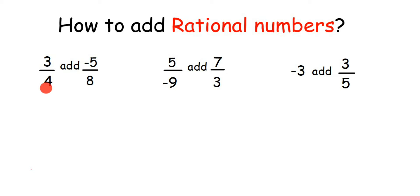The first step is we have to make the denominator same, and once they are same we can add the numerators. It is very simple, right? But how to make the denominator same? We are going to use LCM here. We are going to find the LCM of the denominators and find out their equivalent rational number where the denominator is equal to the LCM.